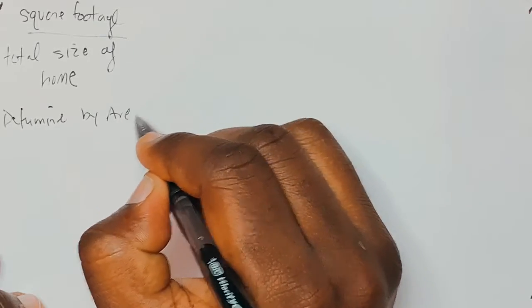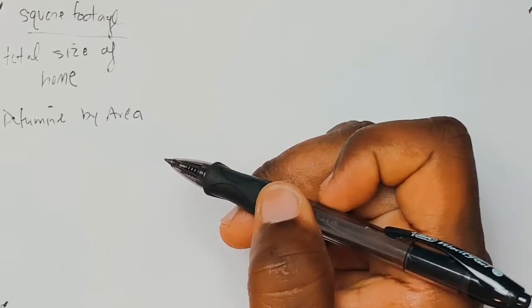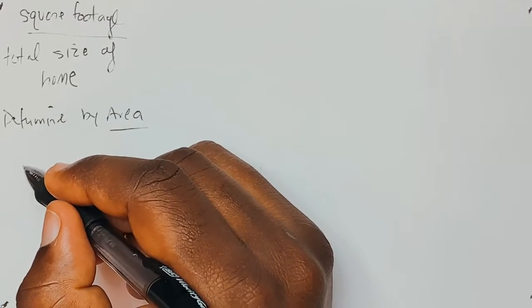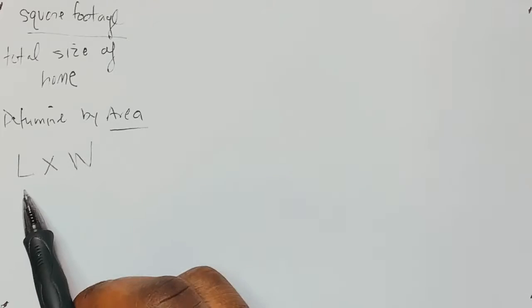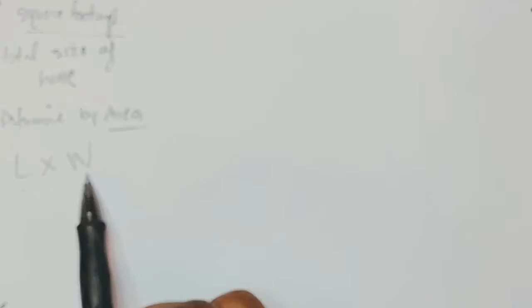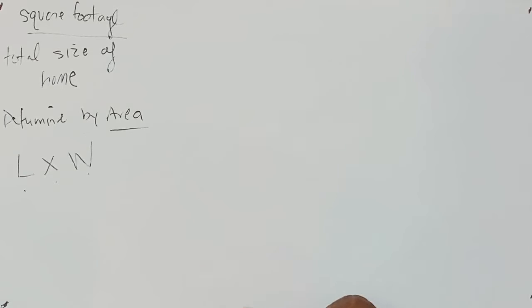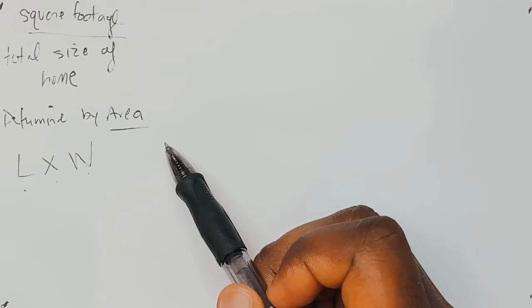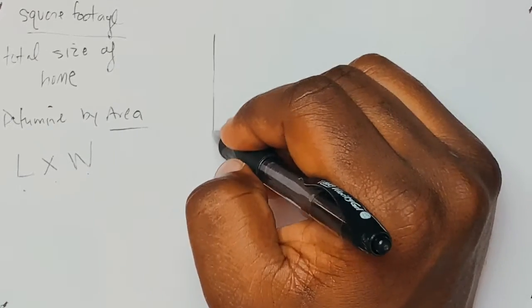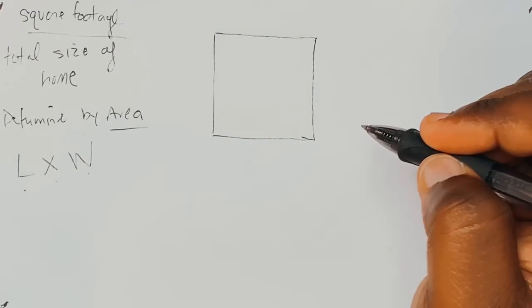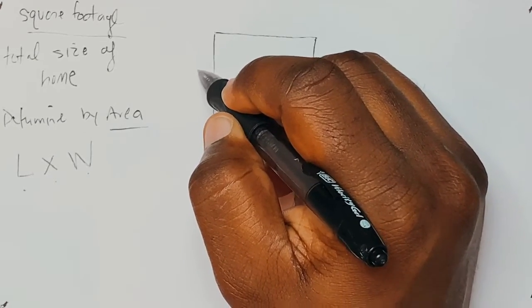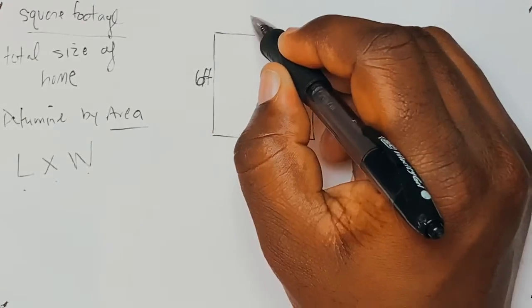The square footage is determined by the area. The area of a room is the total size of the home, which is length times width. The length of the home times the width of the home. The same way the entire home can have a square footage, each room can have a square footage. So we're going to learn how to find the square footage of a room.